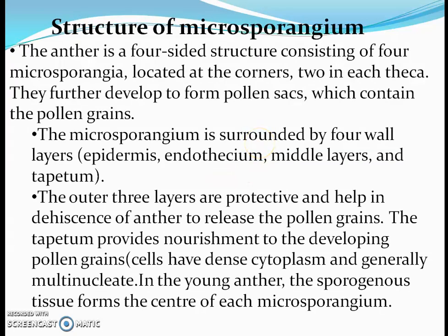If you will see the structure of microsporangium, the anther is a four-sided structure with four microsporangia located at the corners. They form pollen sacs which contain the pollen grains. The microsporangium is surrounded by four wall layers — in sequence: epidermis, endothecium, middle layer, and tapetum. Epidermis is the outermost layer and tapetum is the innermost layer.